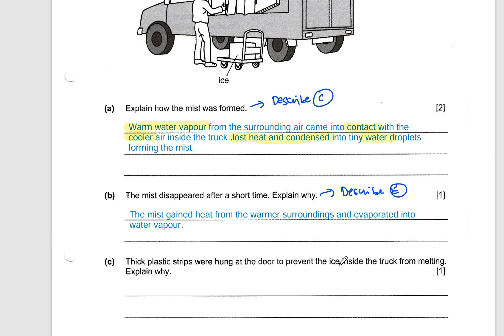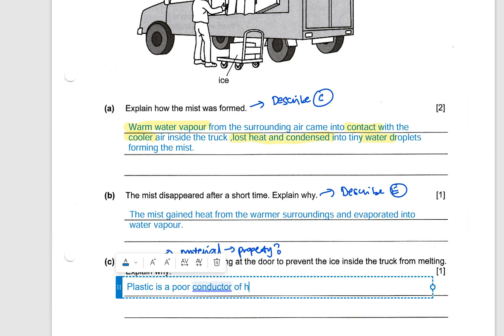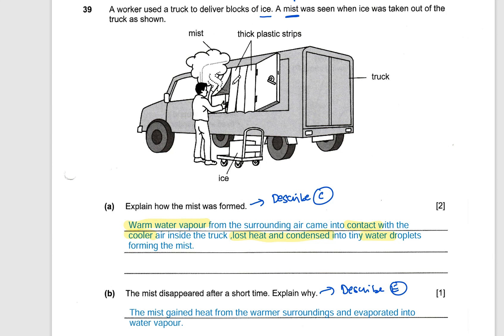Last question. Thick plastic strips were hung at the door to prevent the ice from melting. So plastic. Now plastic is a type of material. They're giving you the material, which means I'm asking you for what property does plastic have that helps the ice to melt slower basically. And this is basically whether it's a good or poor conductor of heat. So all you have to say is plastic is a poor conductor of heat. So how will this prevent the ice from melting? So you see that when you open the plastic strip, this mist forms. So by putting this plastic strip, I'm basically blocking it. I'm blocking the warm air outside. I'm blocking the warm air from entering. So by preventing this, I will prevent the heat gain, the ice from gaining too much heat and melting.